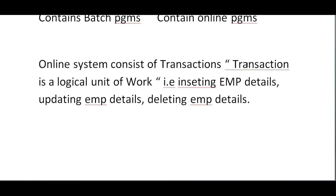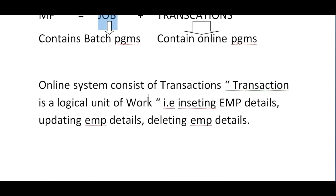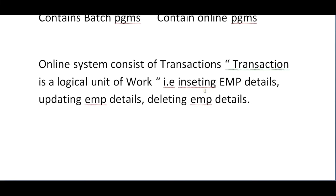When I say job, it's a batch program; when I say transaction, it's an online program. Online systems typically consist of transactions. In future videos I'll talk in terms of transactions, just as in JCL I used the term 'job' continuously. A transaction is a logical unit of work — for example, inserting employee details, updating employee details, or deleting employee details.